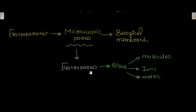So that's all for this video. By doing chemical transformation or electroporation, you introduce DNA into bacterial cells. Thanks for watching, see you next time.